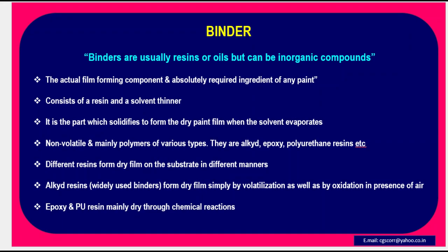Binder: Binders are usually resins or oils but can be inorganic compounds. The actual film-forming component and absolutely required ingredient of any paint consists of a resin and a solvent system. The binder is the part which solidifies to form the dry paint film when the solvent evaporates. Non-volatile and mainly polymers of various types — alkyd, epoxy, polyurethane resins, etc. Alkyd resins, widely used binders, form dry film simply by volatization as well as by oxidation in the presence of air. Epoxy and polyurethane resins mainly dry through chemical reactions.